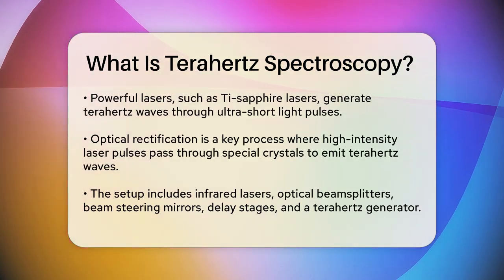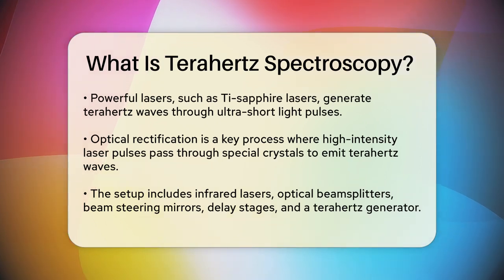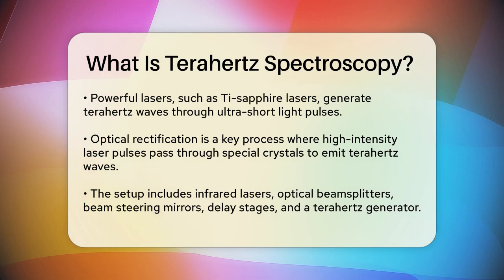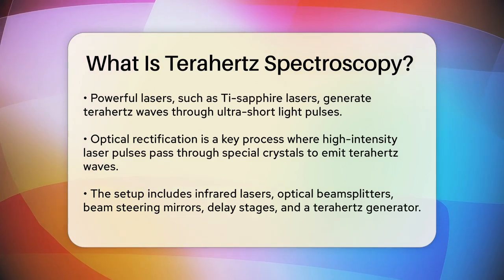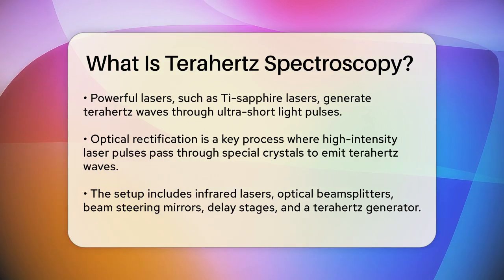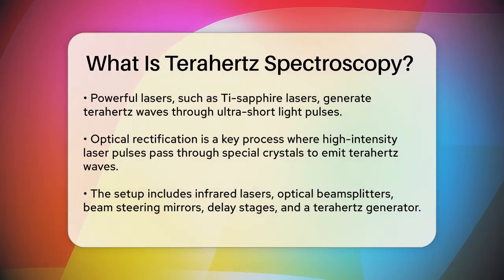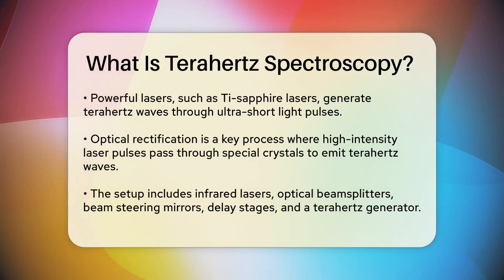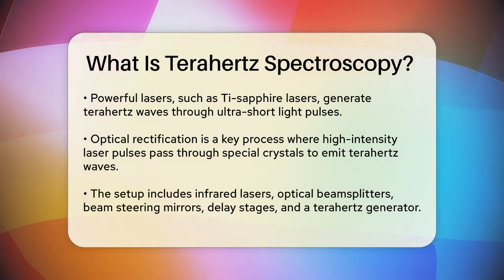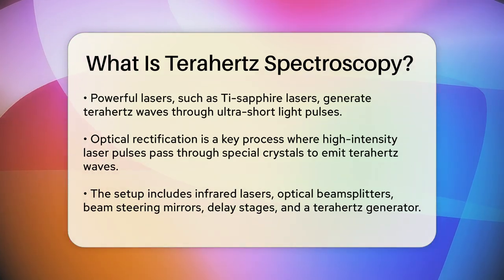The setup for terahertz spectroscopy involves several key components: an infrared laser, optical beam splitters, beam steering mirrors, and delay stages to adjust the path length of the laser pulses. There's also a terahertz generator and parabolic mirrors to focus and collimate the terahertz beams. The detector is sensitive to the electric field of the terahertz signal and uses materials that become birefringent in the presence of an electric field to measure the changes.